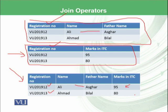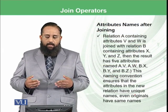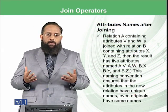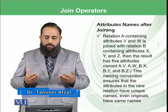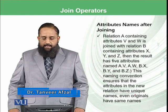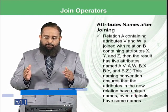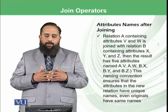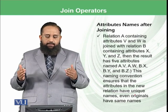This is one typical example of joining based on some criteria, with the join performed based on common attributes known as registration number. Let's elaborate further on how we can join different tables or relations in databases. For example, relation A contains attributes V and W. When it is joined with relation B that contains attributes X, Y, and Z,